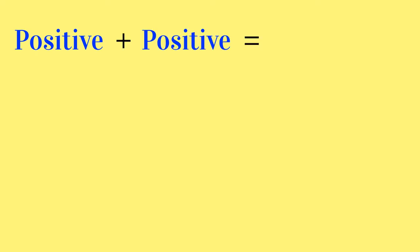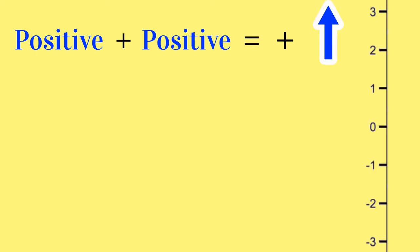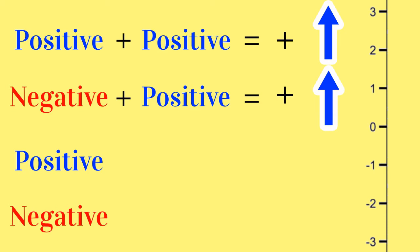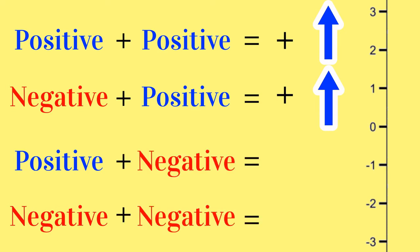So if we add a positive number and a positive number, we need to add and count up the number scale. The same is true if we start with a negative number and add a positive number. But if we start with either a positive or a negative number and add a negative number, we need to subtract and count down the number scale.